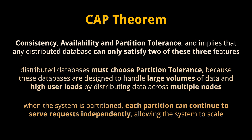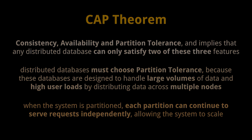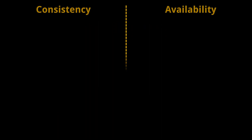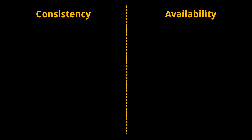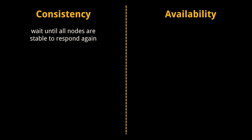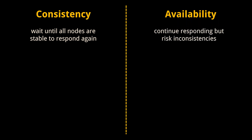By choosing partition tolerance, the system can provide uninterrupted service and maintain performance even when network partitions occur. This implies a trade-off between consistency and availability. If part of the cluster goes down, the system can either satisfy consistency — rolling back any unfinished operations and waiting to respond until all nodes are stable again — or satisfy availability, continuing to respond but risking inconsistencies.